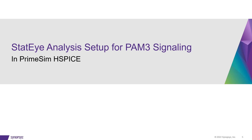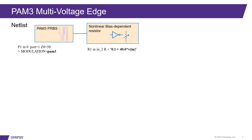My colleague Khalid Nikro will show how PrimeSim HSPICE supports PAM3 technology with bias voltage dependency for accurate eye analysis using STAT-I. In this HSPICE STAT-I analysis setup, a PAM3 PRBS source is driving a resistor whose value is dependent on a voltage source. This resistor represents non-linearity in buffer outputs. The signal then propagates through a channel modeled using the W element and terminated with a 50-ohm resistor where the PAM3 eye diagram is measured.